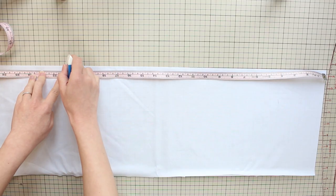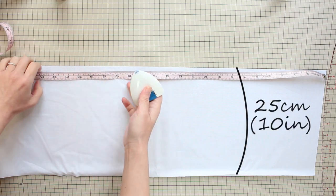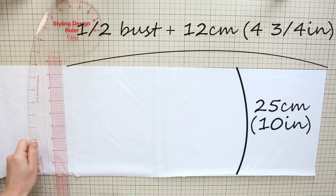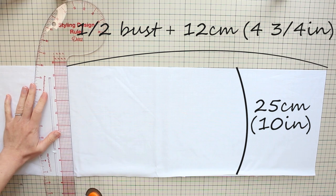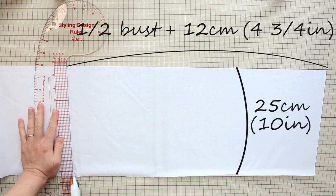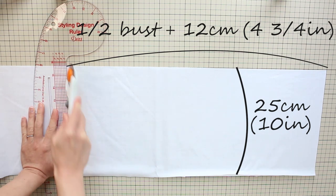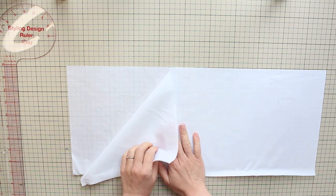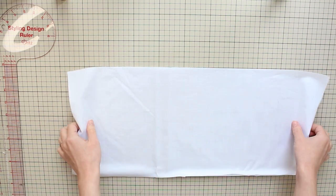Cut two pieces of rectangle fabric that's 25 centimeters or 10 inches wide. And the length is half of your bust measurement plus 12 centimeters or 4 and 3 quarter inches. This makes a bodice that's about 22 centimeters or 8 and a half inches wide when finished. If you want more coverage, make these panels wider.